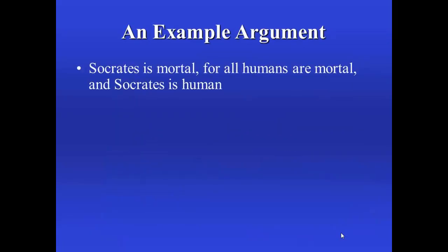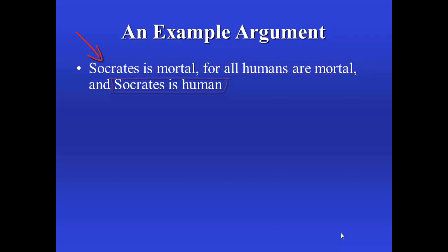Now here's an example argument. Socrates is mortal, for all humans are mortal, and Socrates is human. Now if this is in fact an argument, there should be premises and a conclusion. Luckily, we have some indication of where the premises are here — we have a premise indicator word. That little word 'for' tells the reader or the listener that premises are on their way. So 'for' is indicating that 'all humans are mortal' and 'Socrates is human' are the premises. That leaves 'Socrates is mortal' as the conclusion.